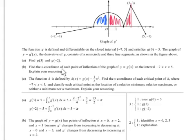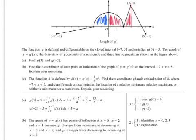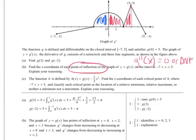Now, find the x-coordinate for points of inflection for g, which is y, on the interval, and explain your reasoning. If I want points of inflection, isn't that where the second derivative of g is 0 or undefined? So a second derivative — a point of inflection — is what I'm looking for: g double prime of x equaling 0 or does not exist.